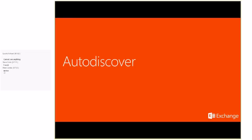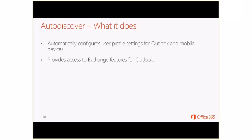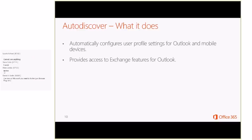So we're going to talk about what AutoDiscover does. It simply automatically configures the user profile settings for either Outlook for Windows, Outlook for Mac, and even ActiveSync devices. On top of that, it also provides access to Exchange features for Outlook. So anytime you're using Outlook and you try to change your out-of-office message, that is leveraging AutoDiscover.